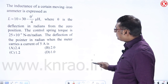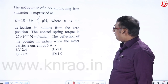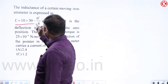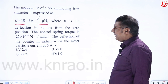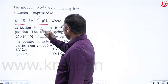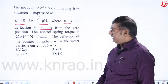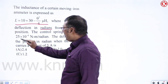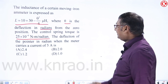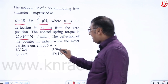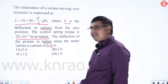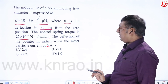Problem 1: The inductance of a moving iron ammeter is expressed as L = (10 + 3θ − θ²/4) microhenry, where θ is deflection in radians from the zero position. The control spring constant is 25×10⁻⁶ N·m/radian. Find the deflection when the meter carries 5 amps.